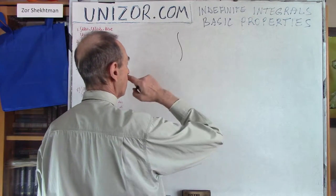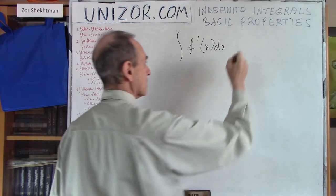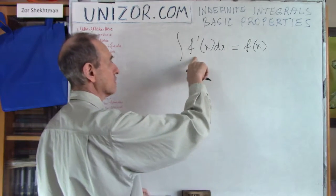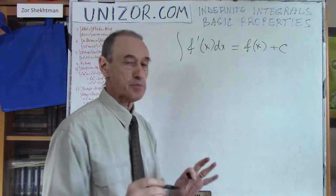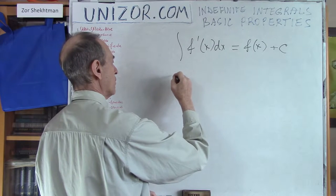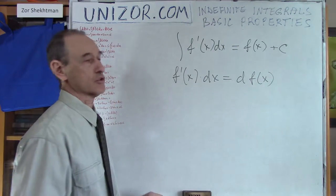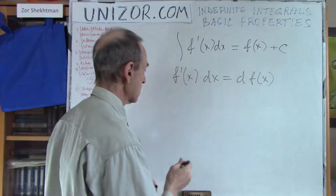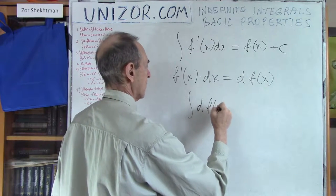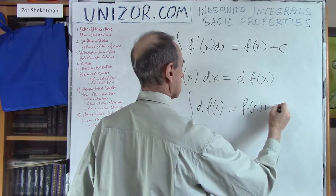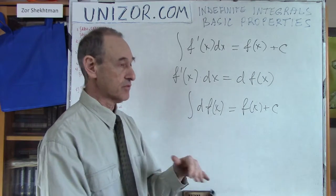My first property is the following: integration of a derivative basically delivers you back your original function. This is the derivative of the function, and this is the original function plus constant c. It can be expressed slightly differently — we remember that f'(x)dx constitutes the differential of the function, so I can rewrite it as: integral of df(x) is equal to f(x) plus constant.